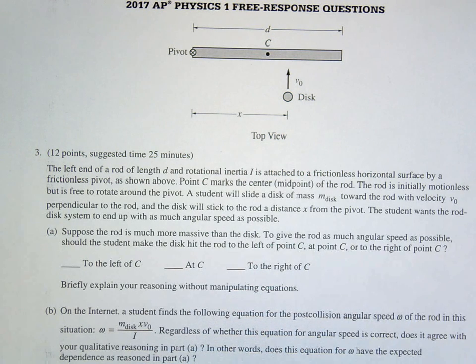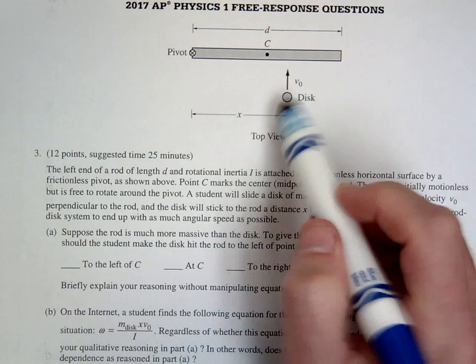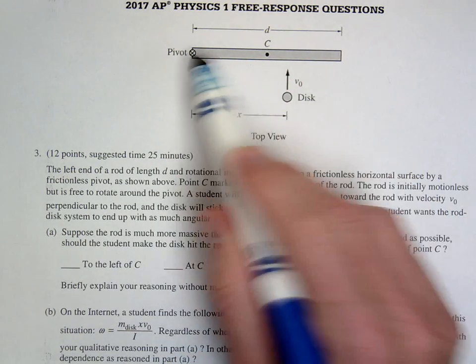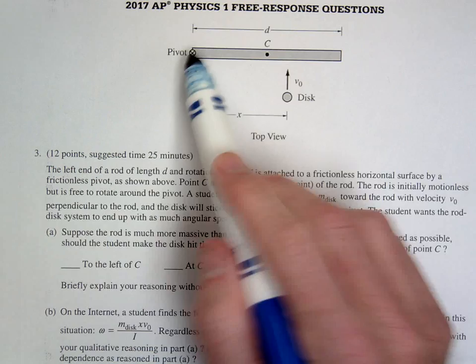So this is the 2017 AP Physics 1 FRQ question number 3. In this question we have this disk, it's going to be colliding with a rod that's on a pivot point.